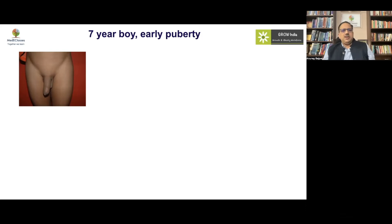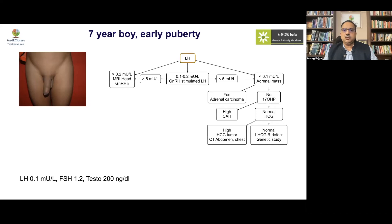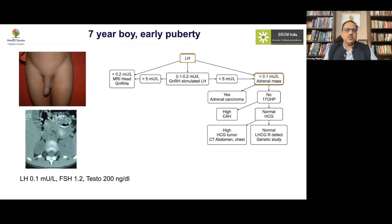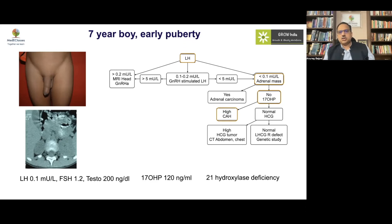A seven-year-old boy with significant penile enlargement but small testicular volume points toward peripheral precocious puberty, confirmed by low LH and FSH with high testosterone. Imaging showed bilateral adrenal enlargement and 17-hydroxyprogesterone levels were high — a classical presentation of congenital adrenal hyperplasia due to 21-hydroxylase deficiency. Note that these individuals have advanced bone age, and when treatment with hydrocortisone begins, removal of androgen-induced suppression of the central axis can trigger central precocious puberty, causing testicular volume enlargement.